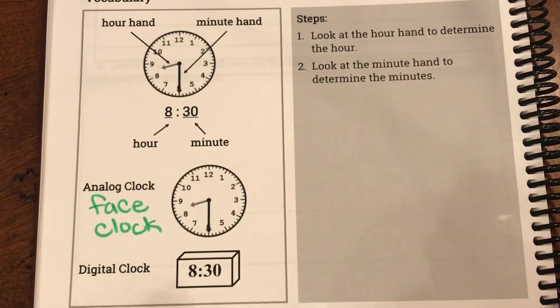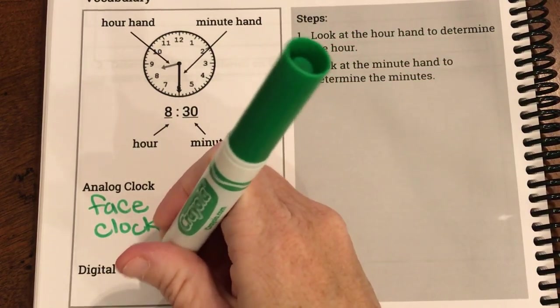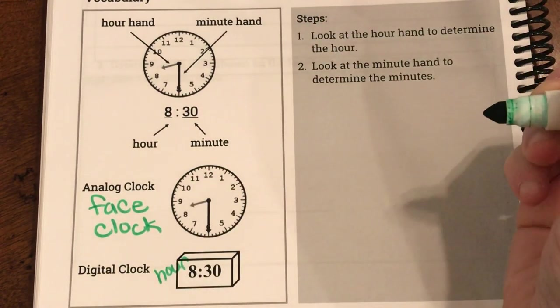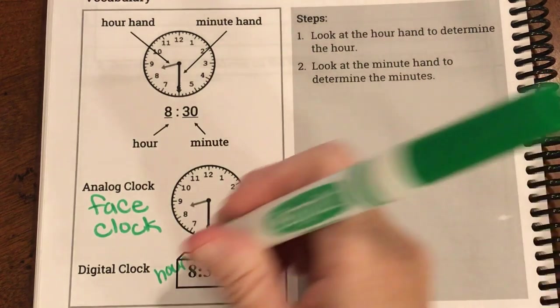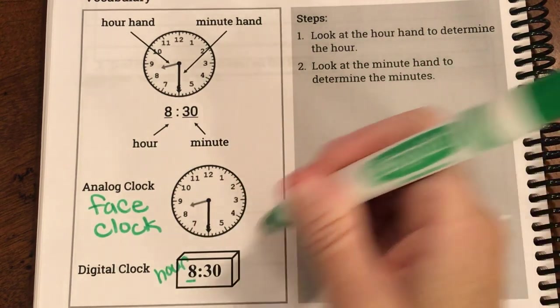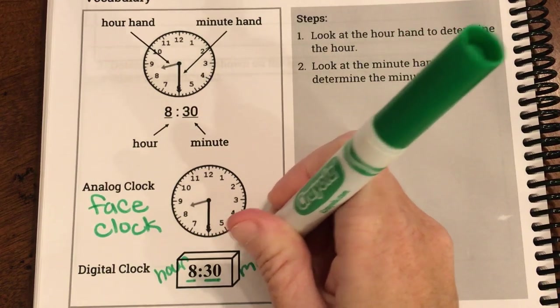So on a digital clock it's easier because I have the hour in front. This is my hour. And then I have the minute after.